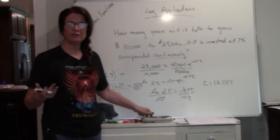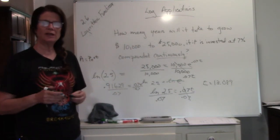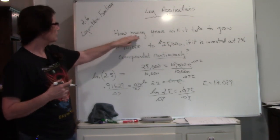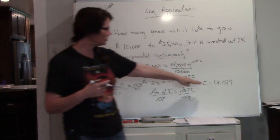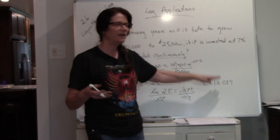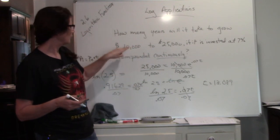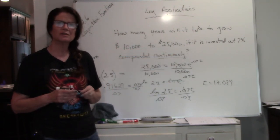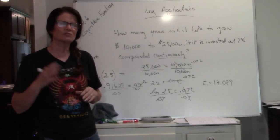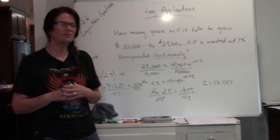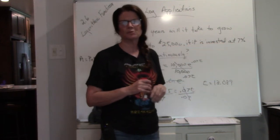So what were you looking for? Remember, whenever you're doing an application, you want to figure out, alright, what was I looking for? Well, I was looking for how many years. So when you look at your answer, that's how many years it's going to take in order to grow your money from $10,000 to $25,000. So it's going to take about 13 years, just over 13 years to grow your money from $10,000 to $25,000 when you have it invested at 7%.